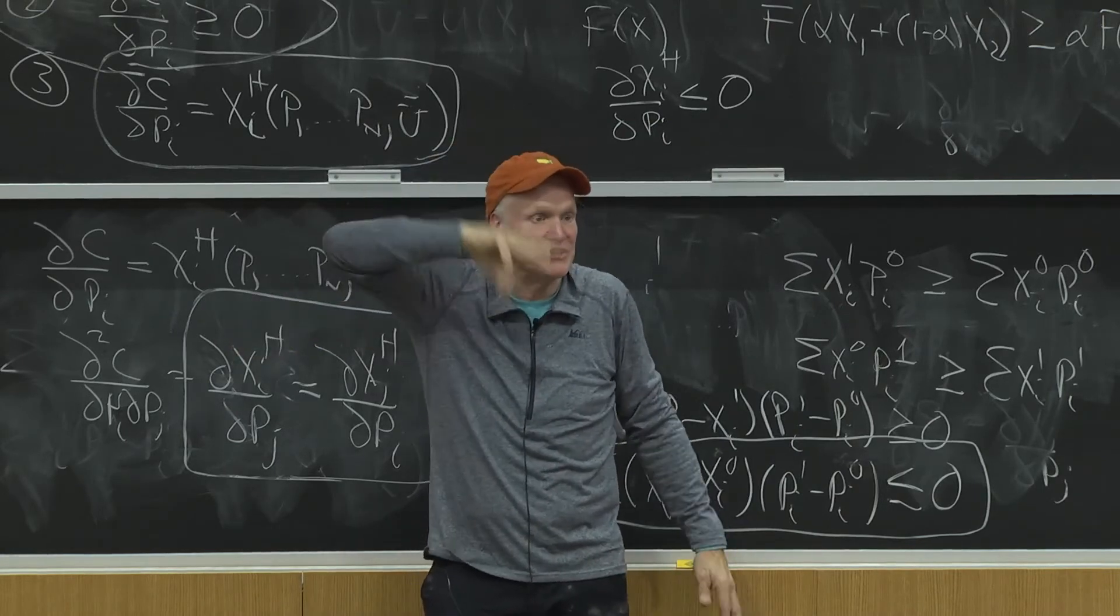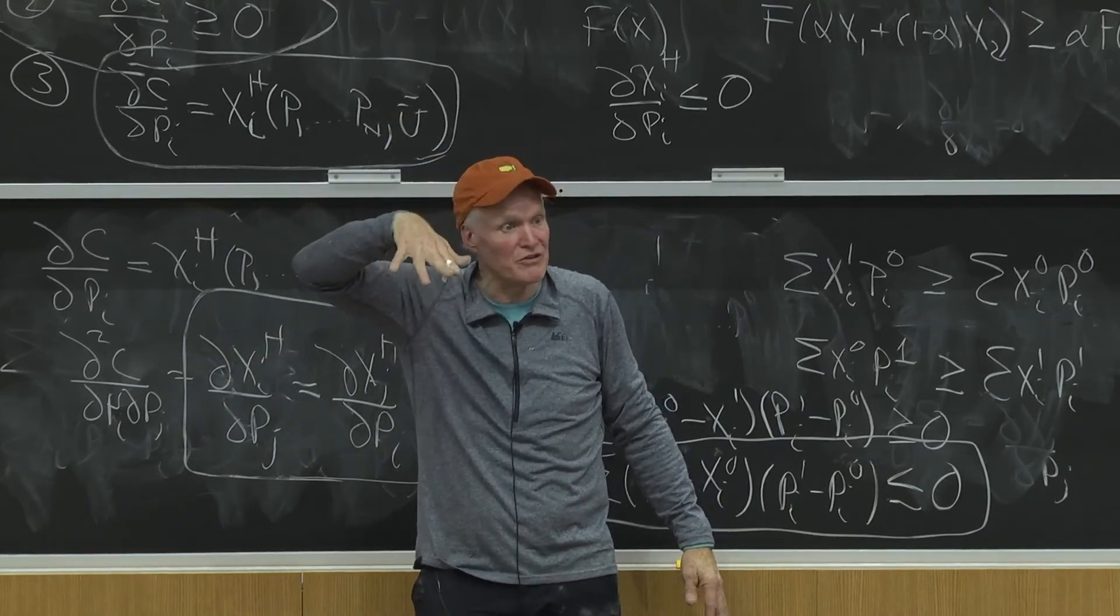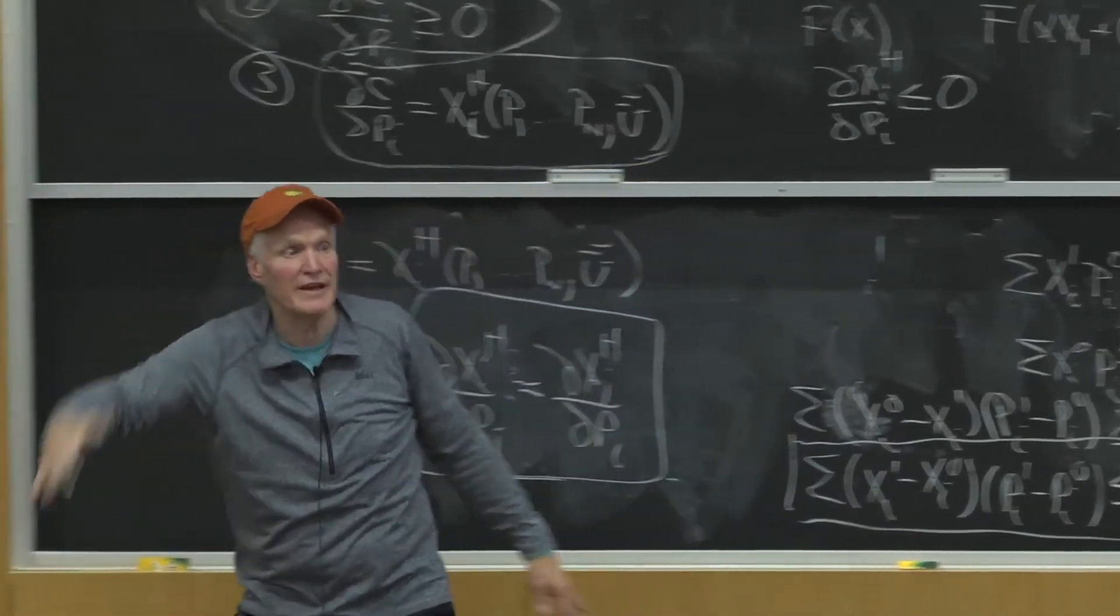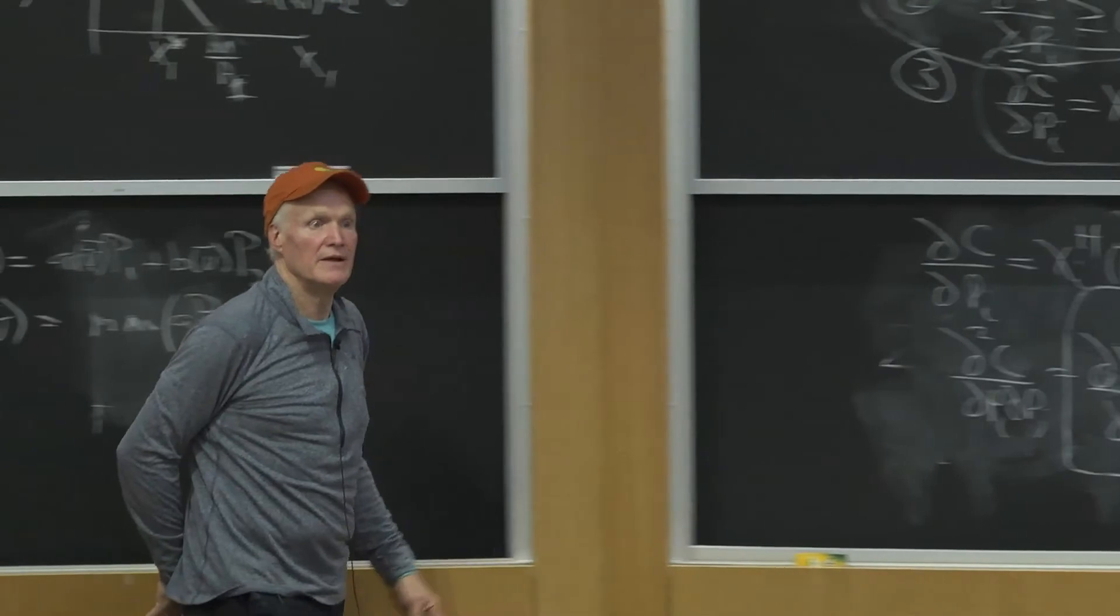right? So there's this nice relationship between how that indifference curve looks and how that corresponding level surface of the cost function, how that cost function looks like at that level of utility.